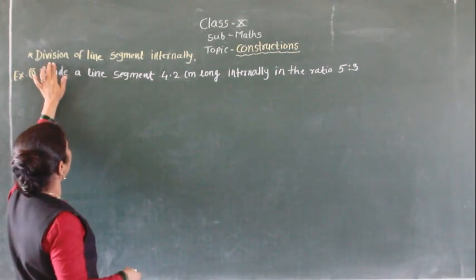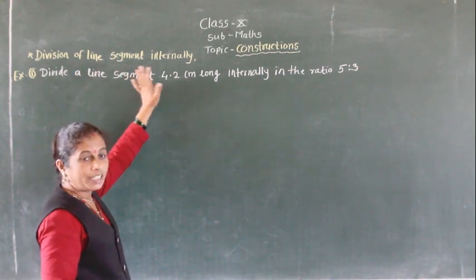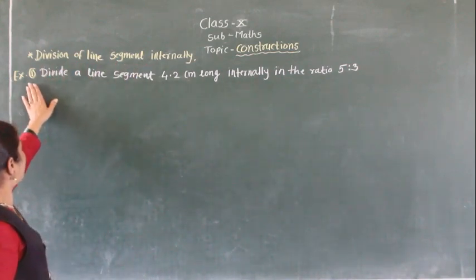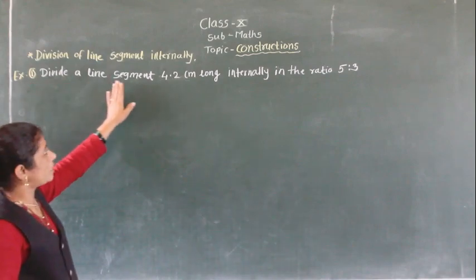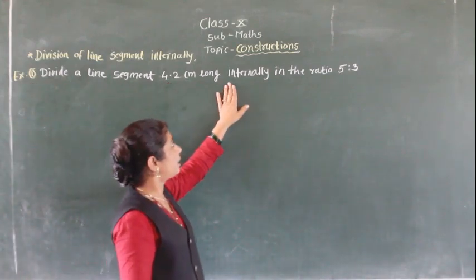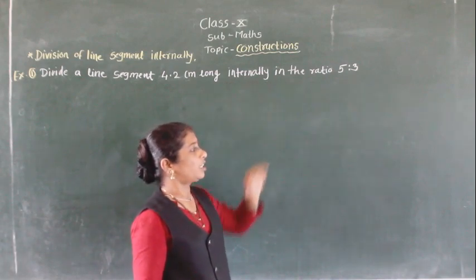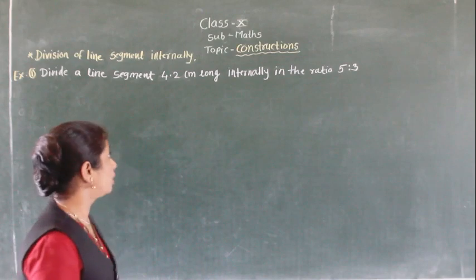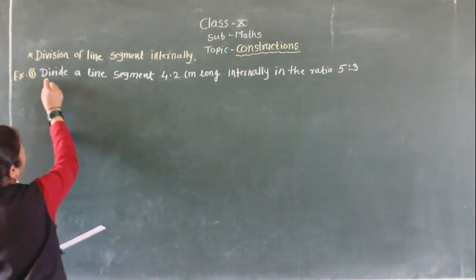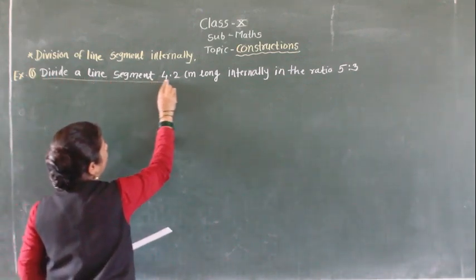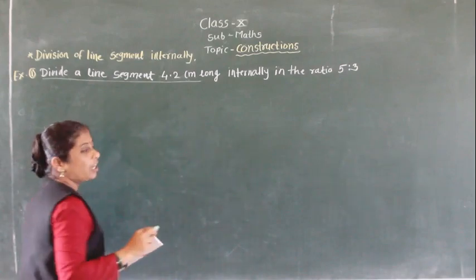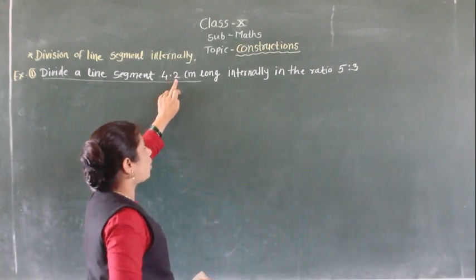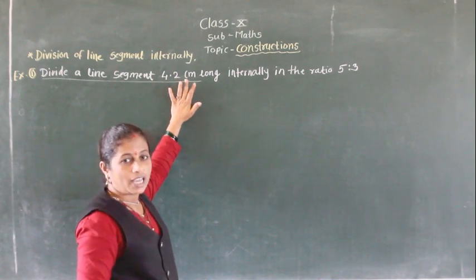In this topic, division of a line segment — internal division. We will see this with the help of an example. First, divide a line segment 4.2 centimeters long internally in the ratio 5 to 3. So how to do this construction? First, we have to draw the 4.2 centimeter line segment.